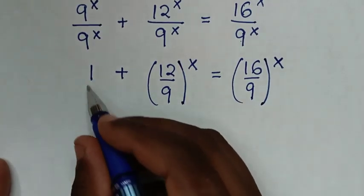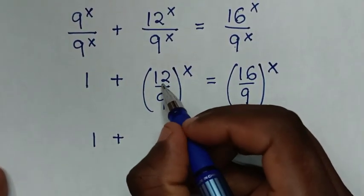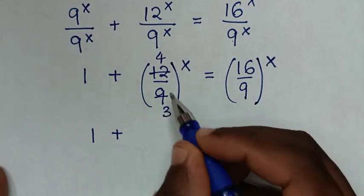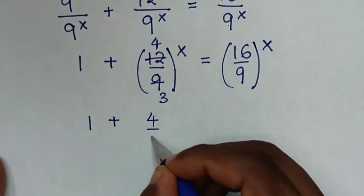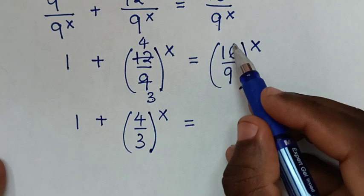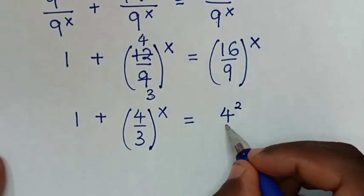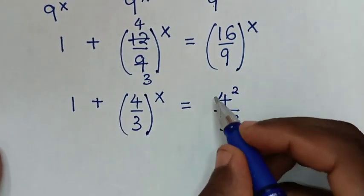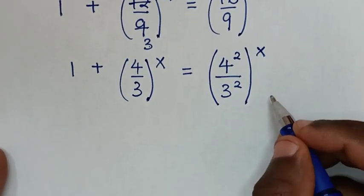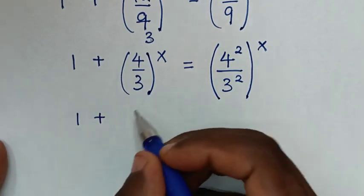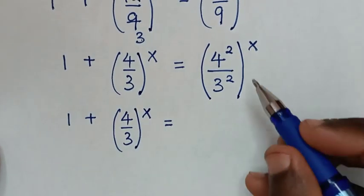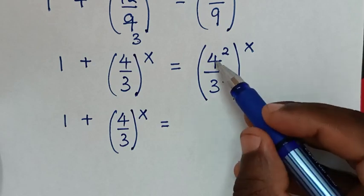In this division of exponents they have the same power of x, so it will be 12 divided by 9, bracket, same power of x. To simplify 12 over 9: 12 divided by 3 is 4, 9 divided by 3 is 3, so it becomes 4 over 3, bracket, power of x. On the right side, 16 is the same as 4 squared, and 9 is the same as 3 squared, so it becomes 4 over 3, bracket, power of x, then squared.